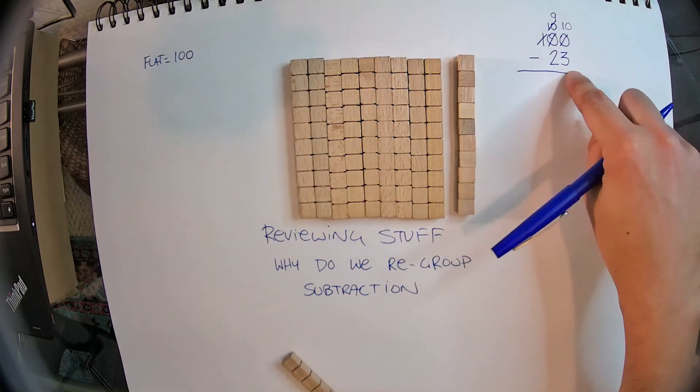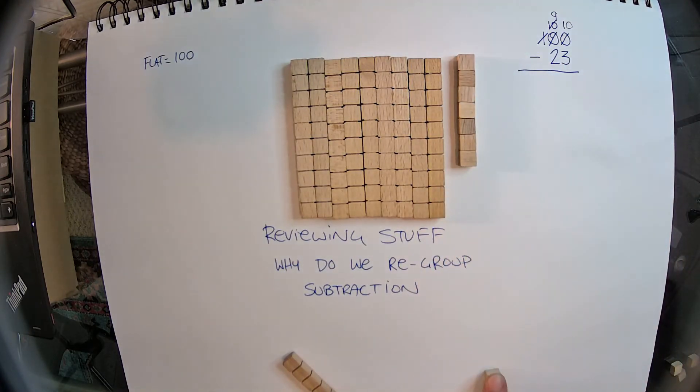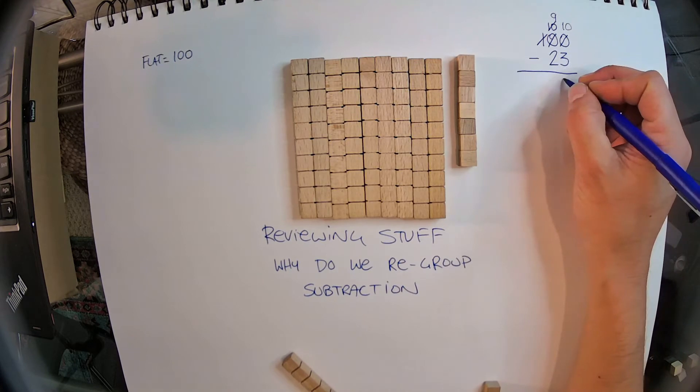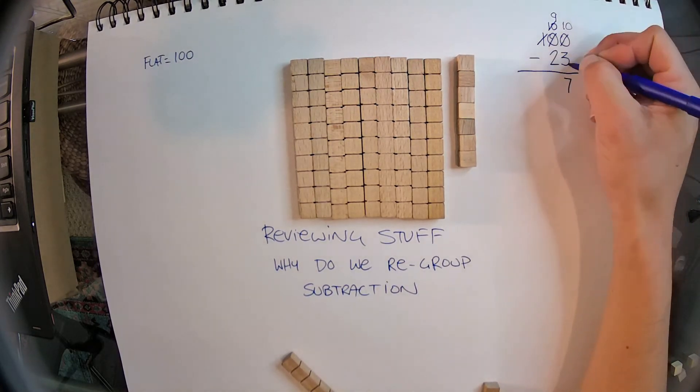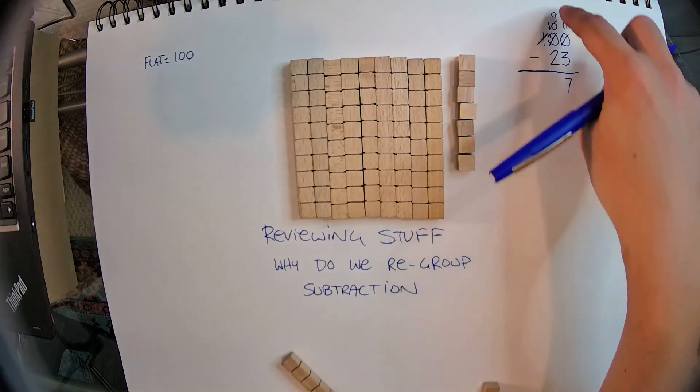So now, can I take 3 of these ones away from these 10 ones? Yes, I can. And how many do I have left? I have 7. 10 minus 3 is 7. 1, 2, 3, 4, 5, 6, 7.